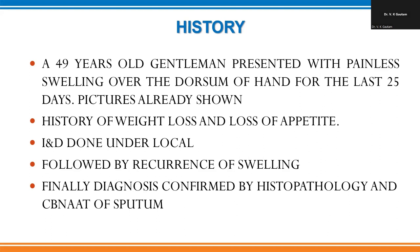This 49-year-old gentleman presented with painless swelling over the dorsum of the hand for 25 days. An average physician or orthopedic surgeon may not be aware that tuberculosis can occur in tendon sheaths and bursae. This case had all the typical features to develop tuberculosis — he was HIV positive, on ART. An astute clinician should always think of the possibility of tuberculosis. Because he had a history of weight loss, somebody performed an incision and drainage considering it a pyogenic abscess.